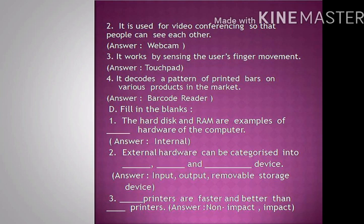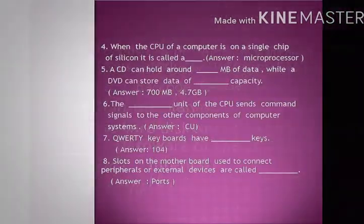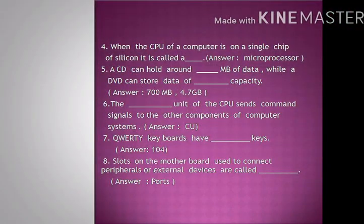Question D: Fill in the blanks. Number 1: The hard disk and RAM are examples of internal hardware of the computer. Answer: Internal. Number 2: External hardware can be categorized into input, output, and removable storage devices. Number 3: Non-impact printers are faster and better than impact printers.